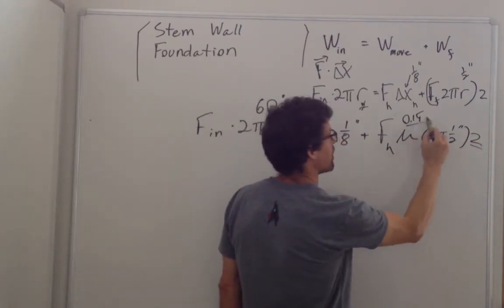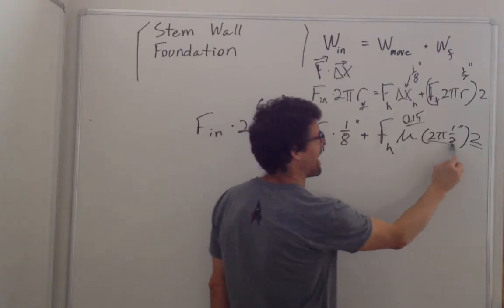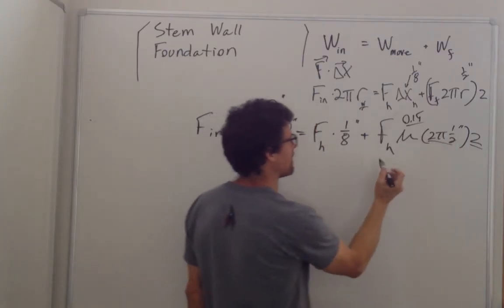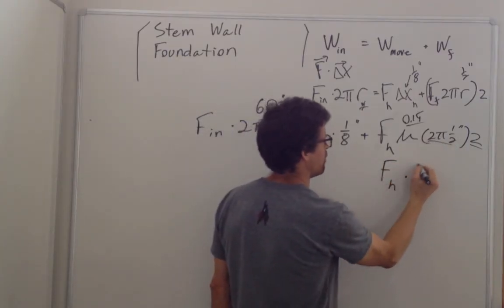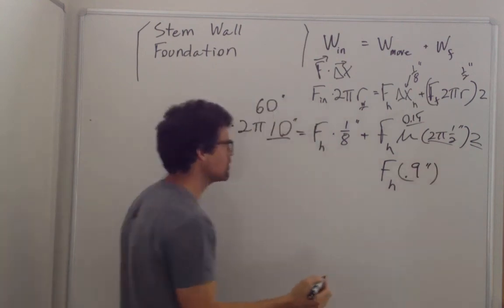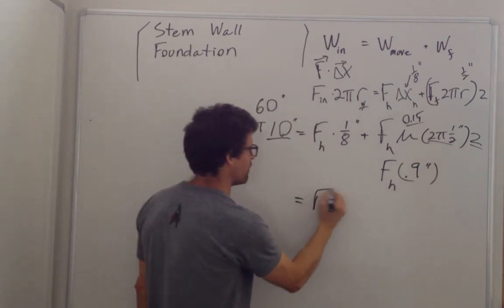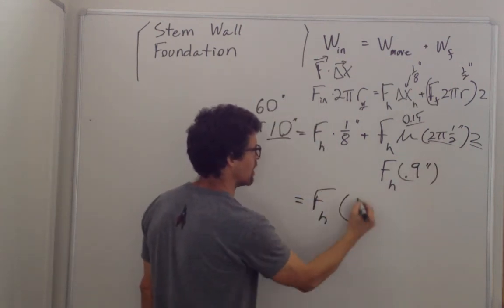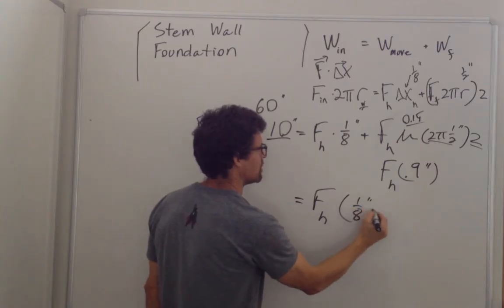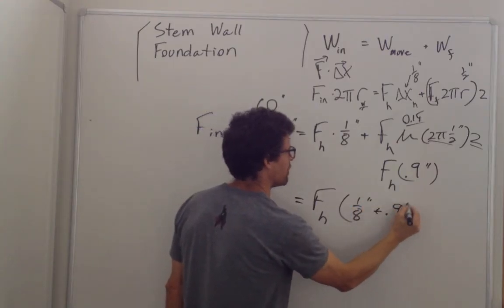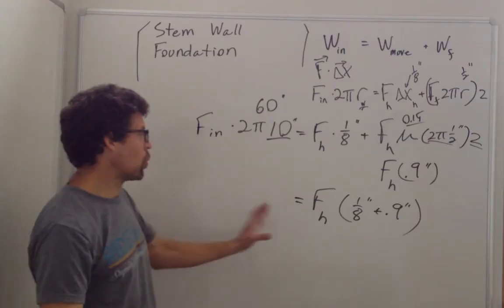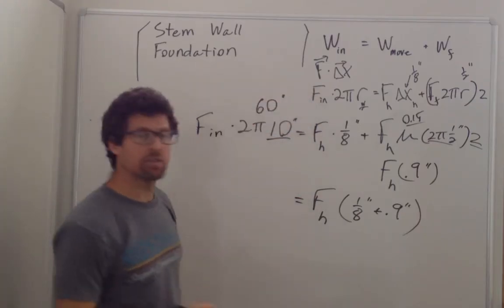So two times point one five is point three, and a half of six is three. So this is on the order of point nine inches. And so we can simplify this, this force on the house, one eighth of an inch, plus point nine inches. Is the work out? Is the work done on the house?